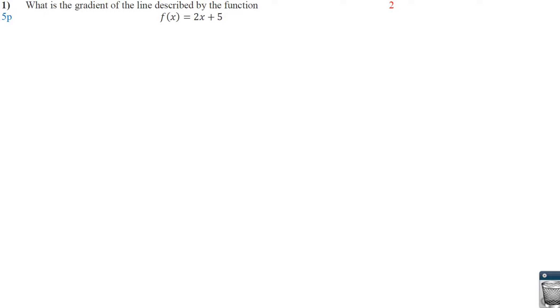The first problem, the gradient. I just want to make sure that you knew that the gradient meant slope. So we're just looking for the slope of this line. And since it's in y equals mx plus b, hopefully it's pretty obvious that the slope is just 2.